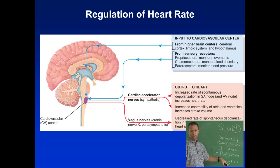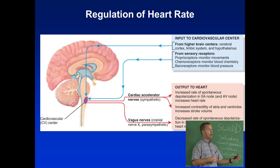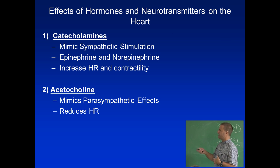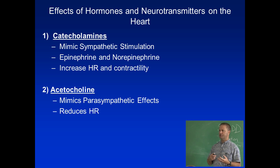Your blood is being diverted away from non-essential organs — we don't care if you're digesting the cheeseburger you ate for lunch; we're diverting blood to the muscles so we can deal with the emergency. That's one reason why someone doing a lot of exercise may not be able to digest very well. Stimulant drugs called catecholamines — things like epinephrine — increase heart rate and sometimes contractility, whereas acetylcholine mimics parasympathetic effects and reduces heart rate.